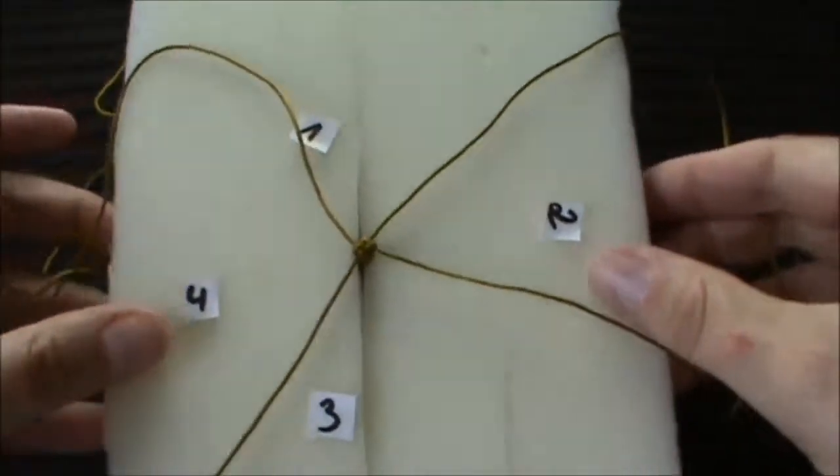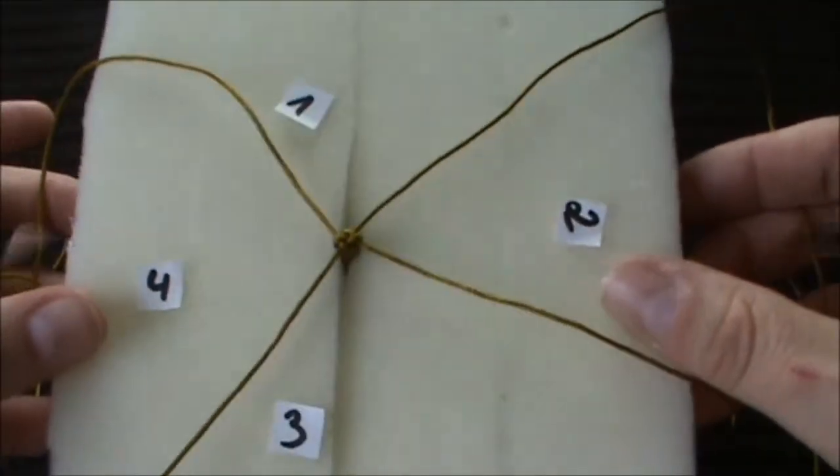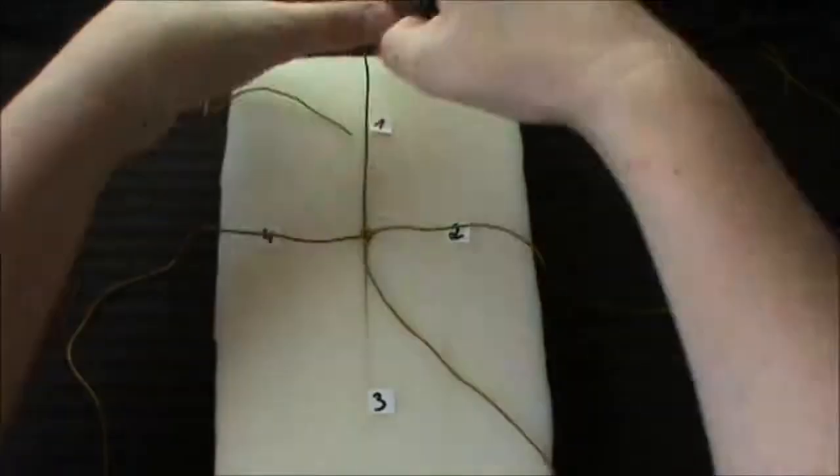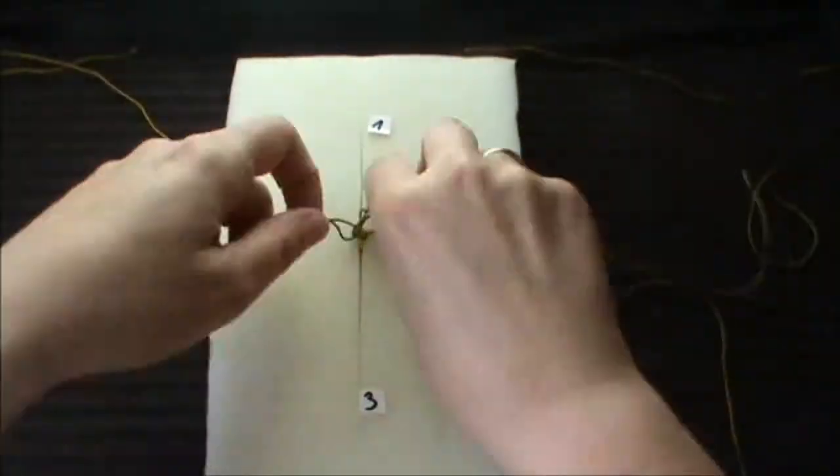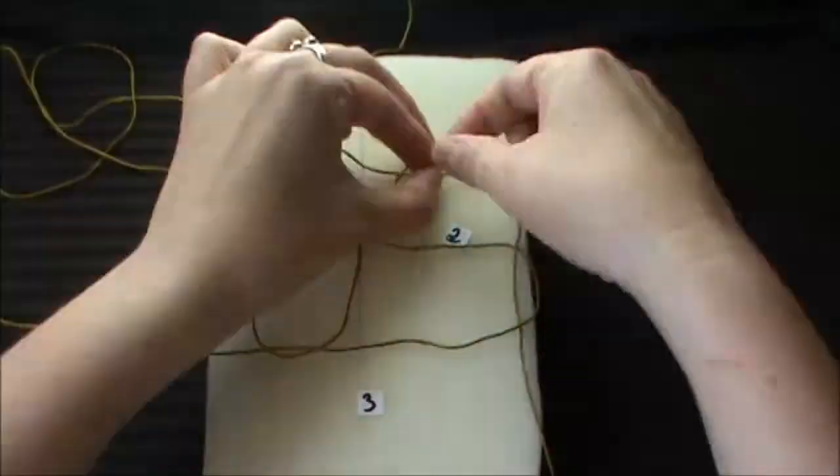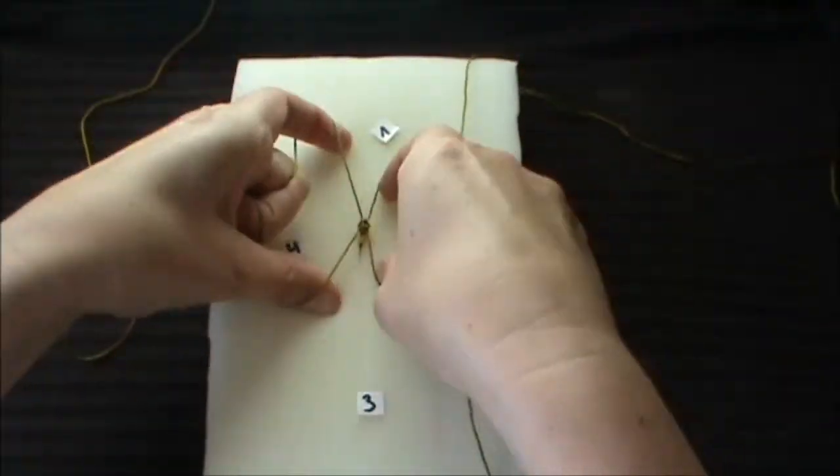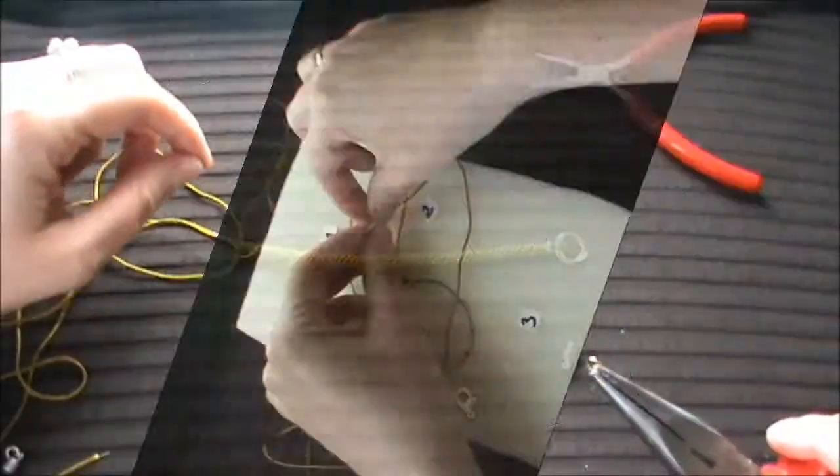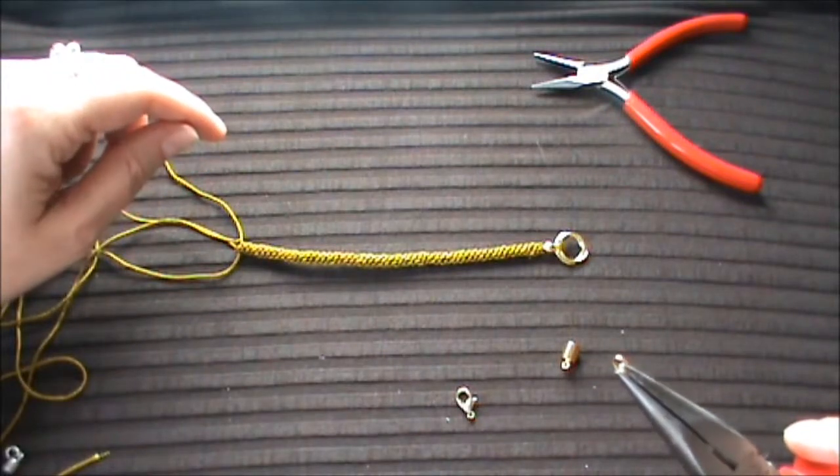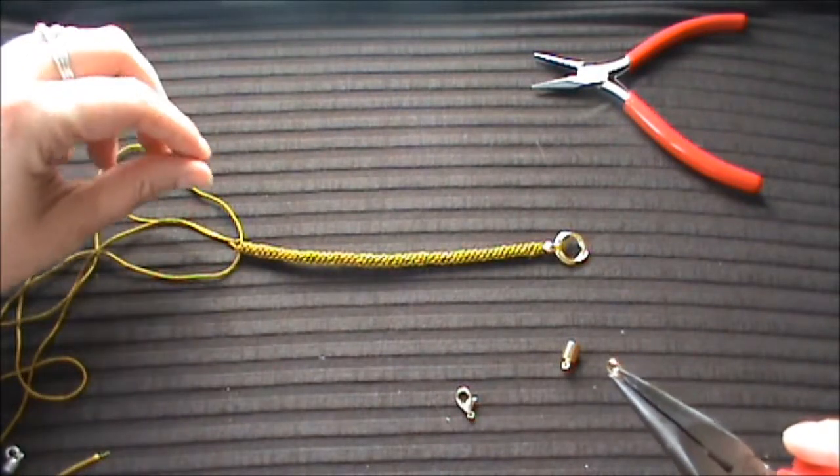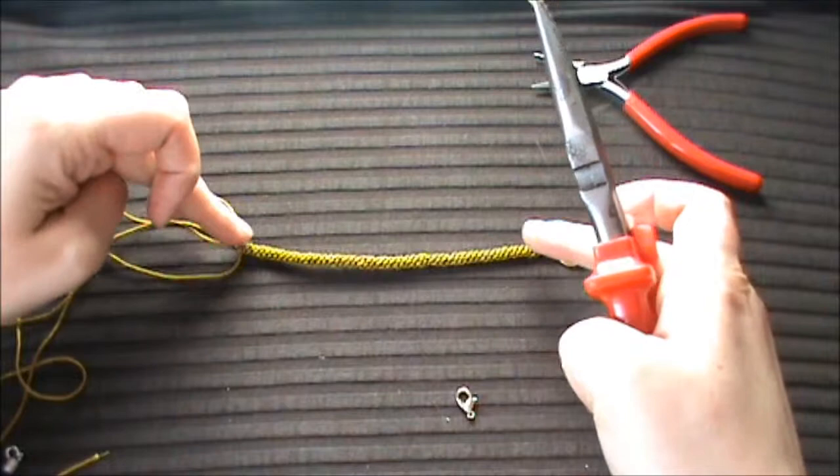And now you can pull the four strings. And you have this knot. Go on doing this. Now it's time to find out how long the bracelet should be and how long the knotted part has to be.